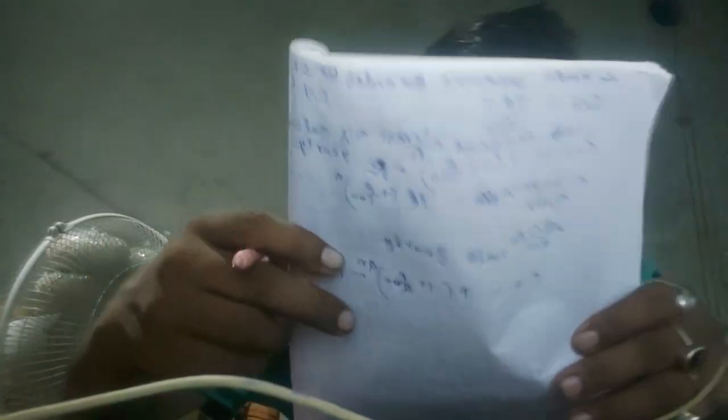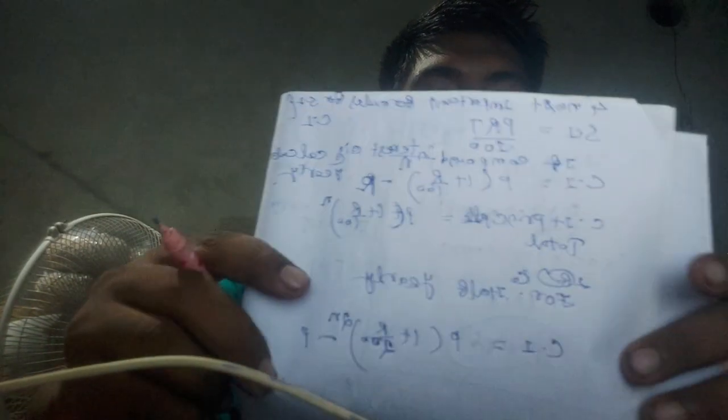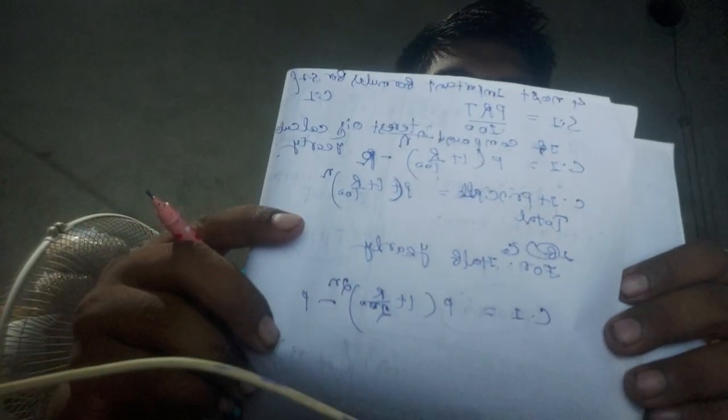The basic formula for calculating Compound Interest is P into 1 plus R by 100 to the power N, minus P. Here, P is principal, R is Rate of Interest, and N is Time.